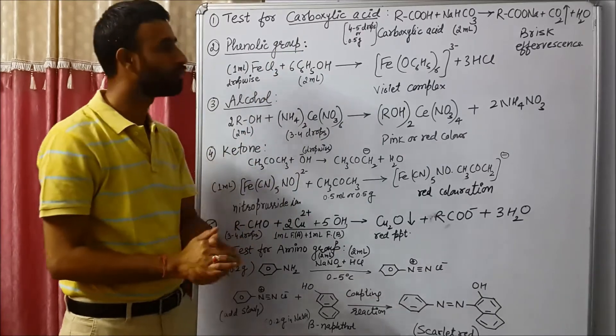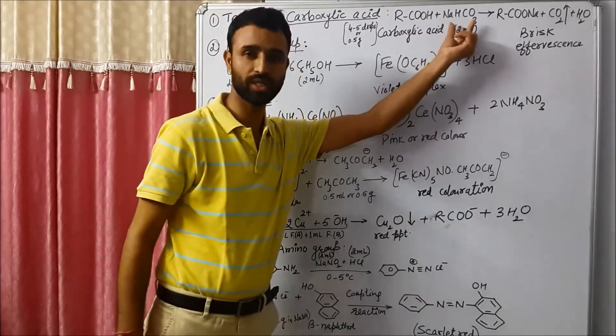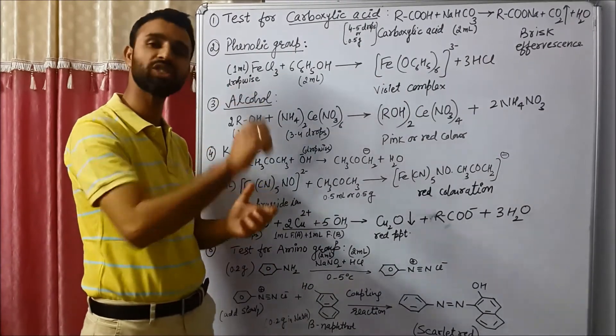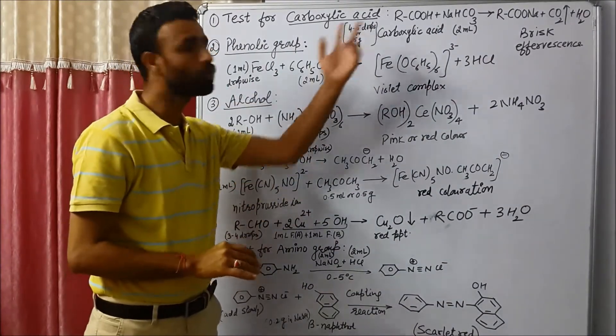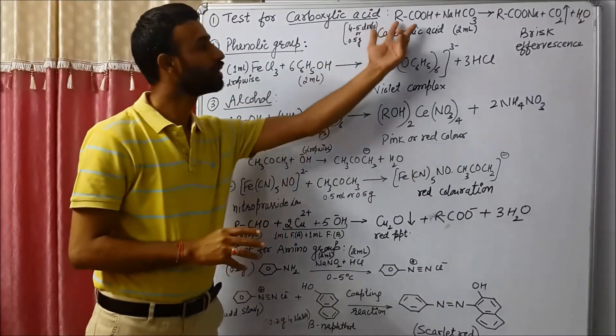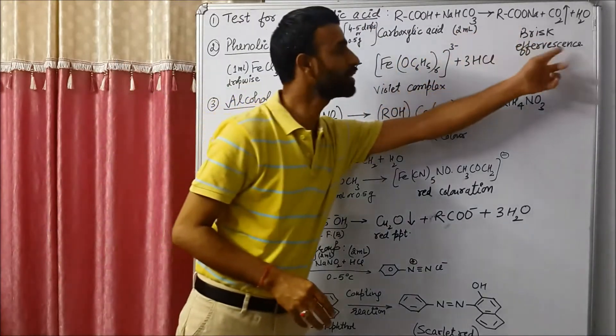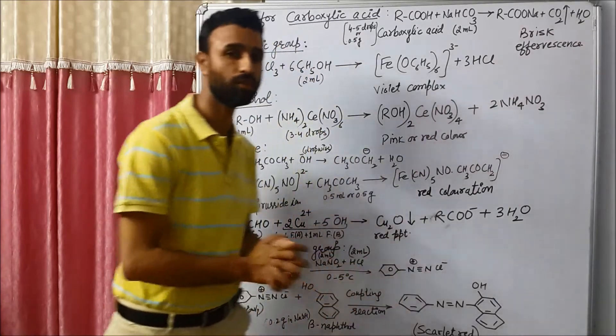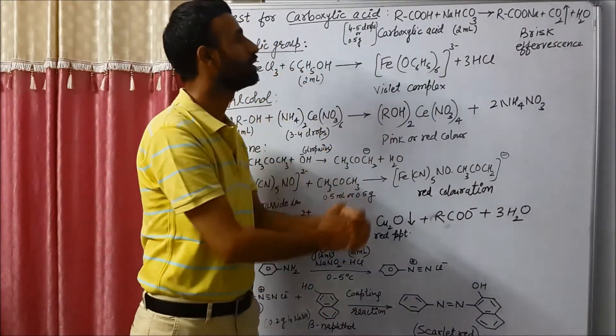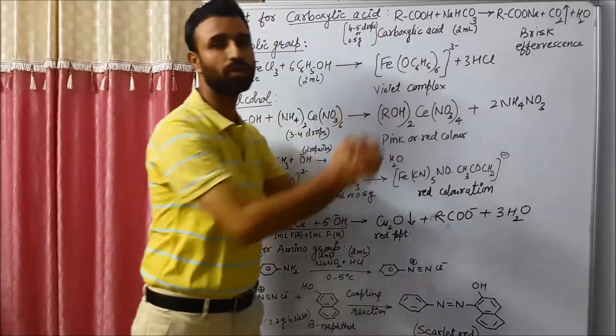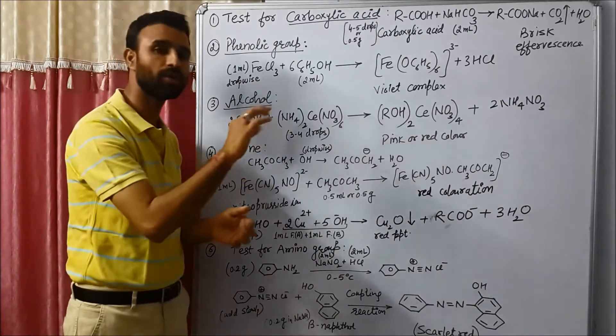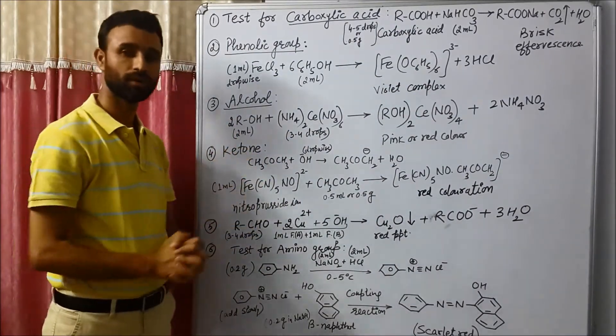Again, I repeat, first take sodium hydrogen carbonate, 2 ml aqueous solution in a dry test tube and 4 to 5 drops of carboxylic acid. So if brisk effervescence is observed, that means our carboxylic group is present in the given organic compound.